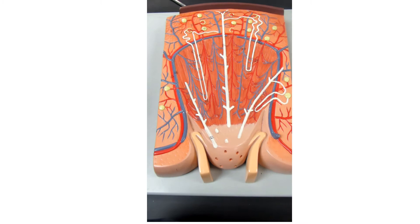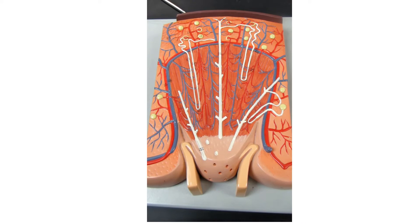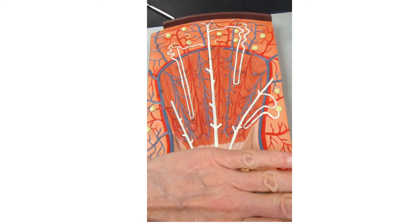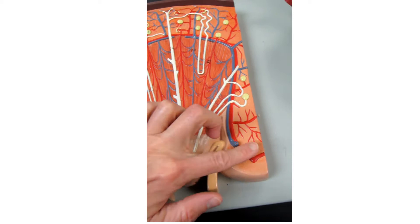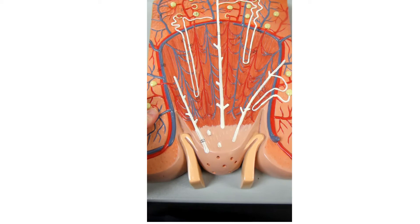Let's take a close look at the kidneys and the nephron on this model. To set up orientation, this is a frontal section through the kidney. Here is the renal cortex, here is the medulla, here is a renal pyramid with its renal papilla, and it's separated on either side by renal columns.